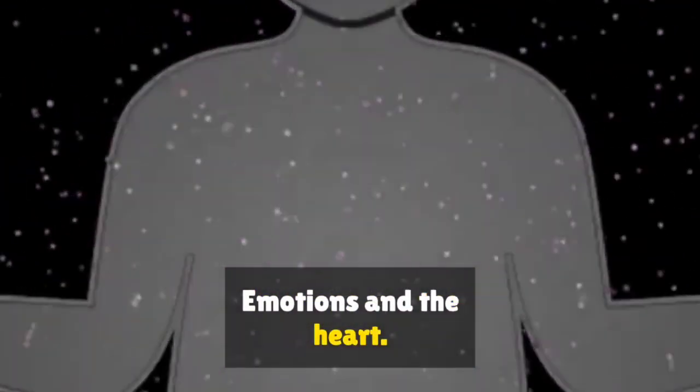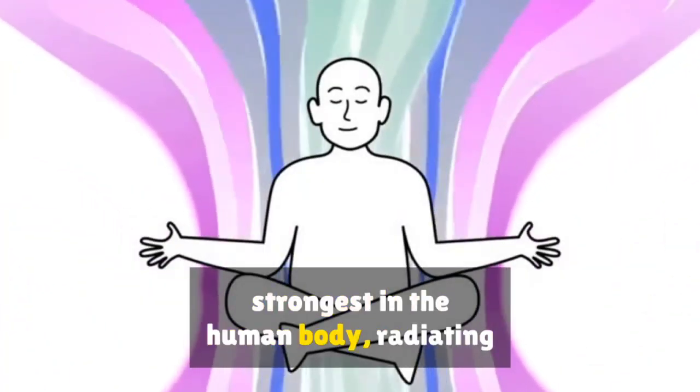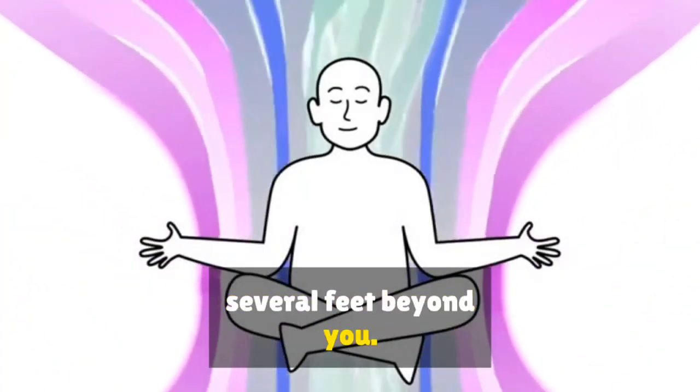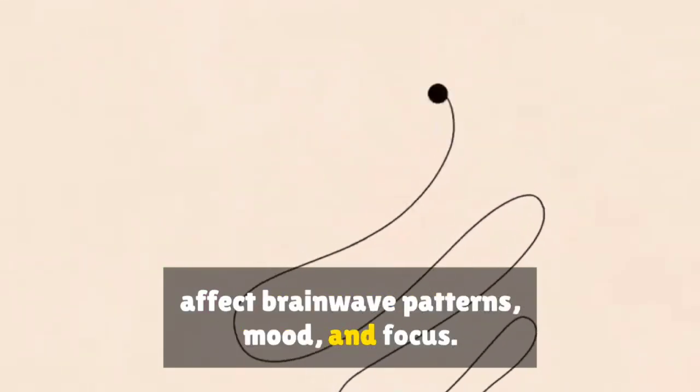Emotions and the heart: The heart's electrical field is the strongest in the human body, radiating several feet beyond you. Shifts in heart rhythm can instantly affect brainwave patterns and mood.